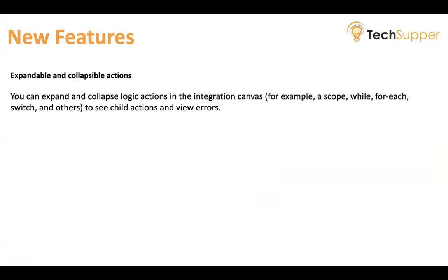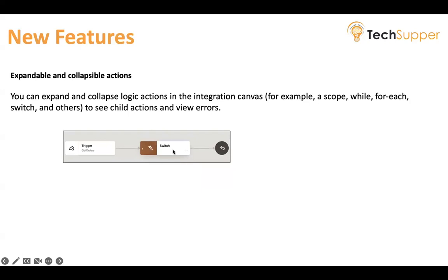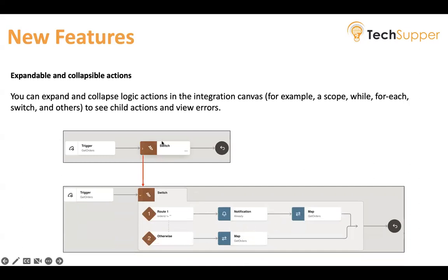Expandable and collapsible actions is another new feature. You can expand and collapse logic actions in the integration canvas. For example, under a Scope, you can have multiple child actions or invokes. Similarly, under While, For Each, Switch, and others, you can see their child actions. If you have a Switch with multiple configured branches and multiple actions under each branch, your canvas can get very large. You can collapse it and later expand it to view all configured actions under Switch using the collapse/expand icon.